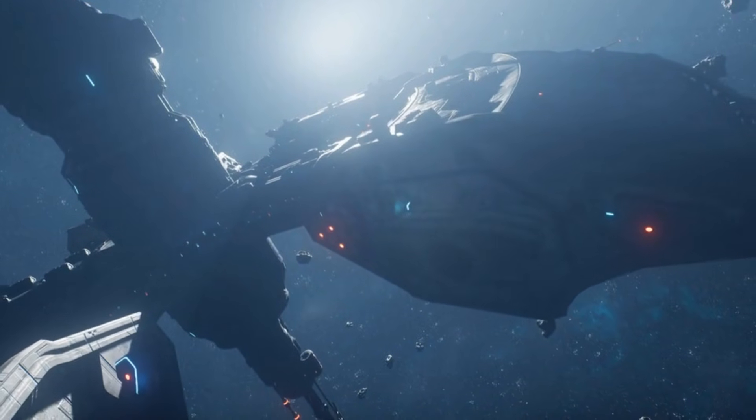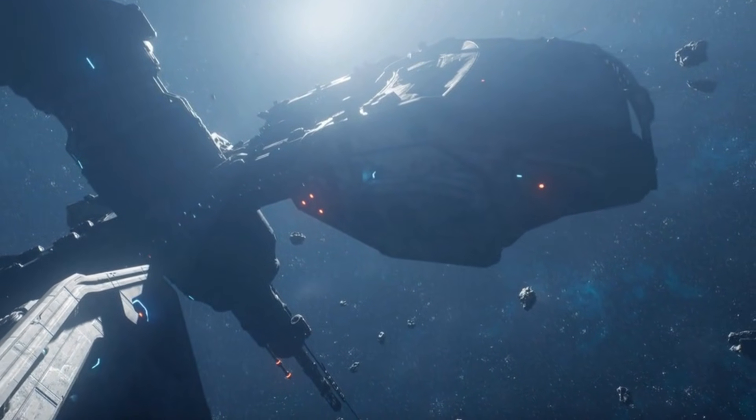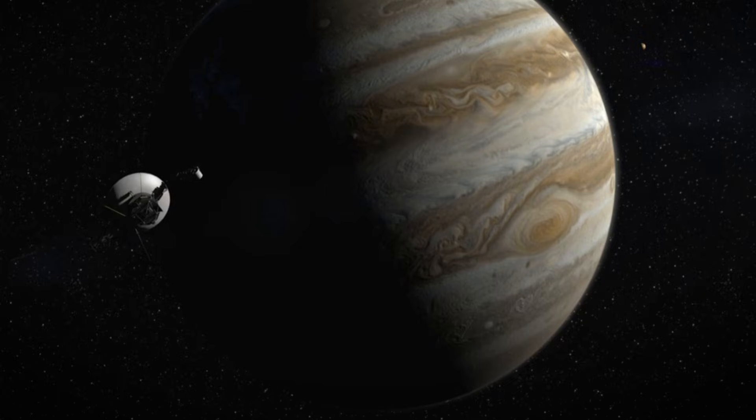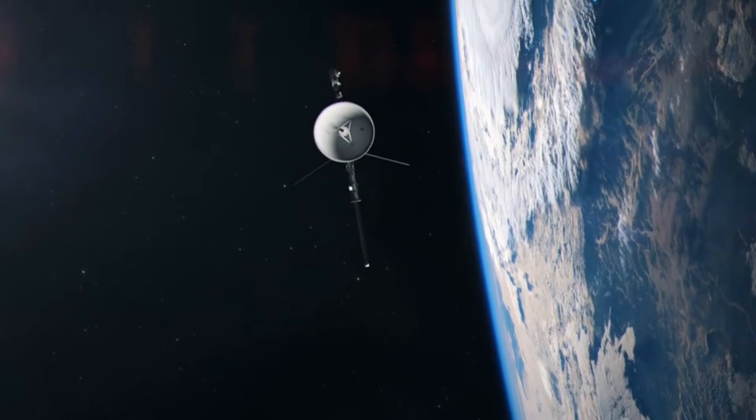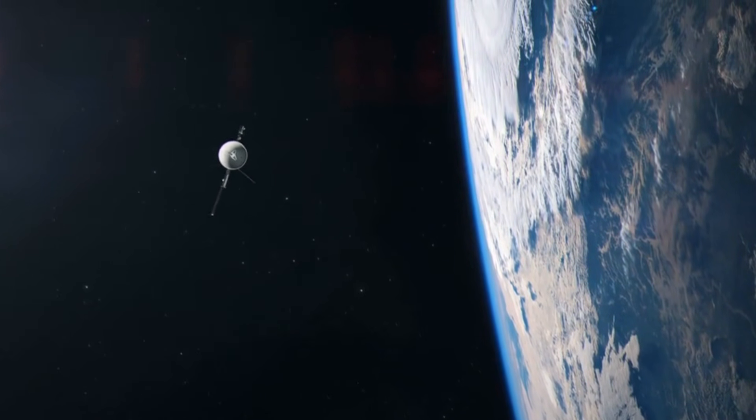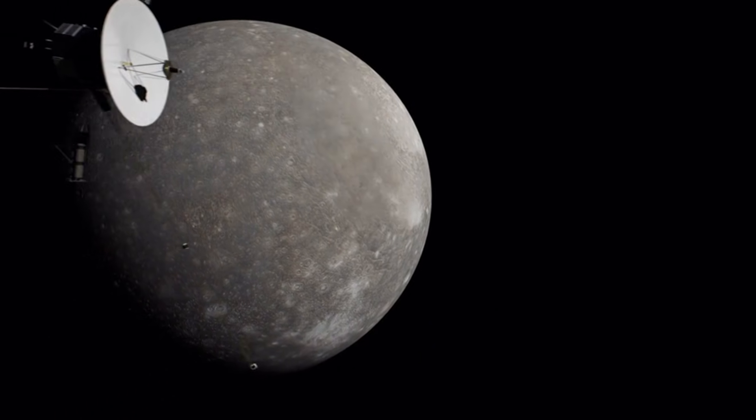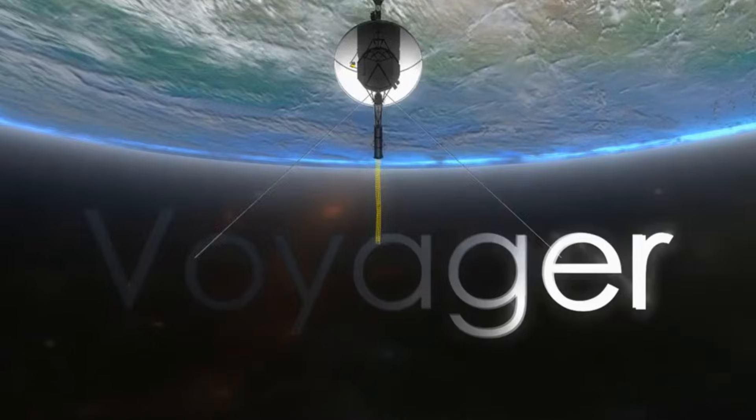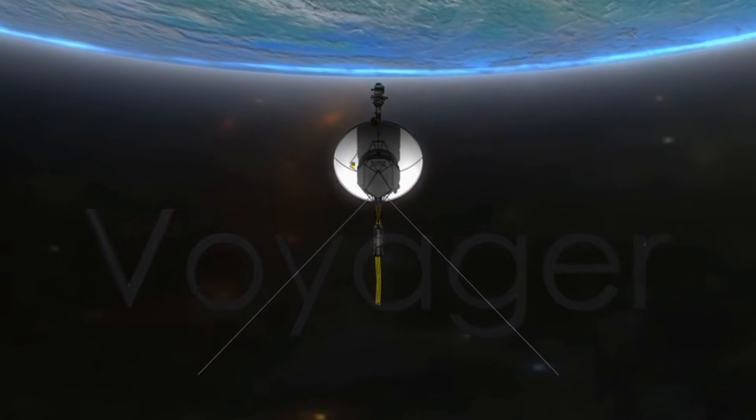Voyager 2's instruments detected a stronger interstellar magnetic field than expected, shedding light on the interactions between the Sun and the surrounding cosmic environment. Despite their age, both Voyager spacecraft continue to defy expectations. Engineers have implemented innovative strategies to conserve power and extend their operational lifespans. For instance, Voyager 2 recently switched to backup thrusters last used during its 1989 flyby of Neptune. These measures have allowed the spacecraft to continue transmitting data, even as their power sources dwindle.